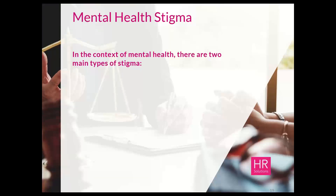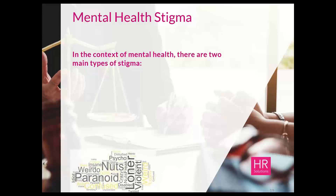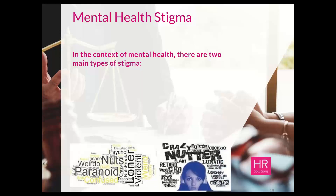Moving on to mental health stigma. In the context of mental health there are two kinds of stigma. First, let me bring up these two icons because there are words on them you'll know and possibly use — words like nuts, paranoid, psycho, insane, weirdo, loner, violent, crazy, nutter, fruitcake, cuckoo, lunatic, loony, bonkers. I think a lot of these words we use as throwaway words in society, and I hear them all the time walking around workplaces.